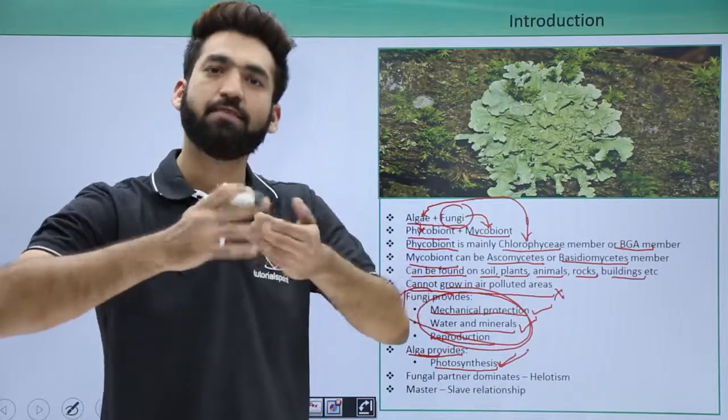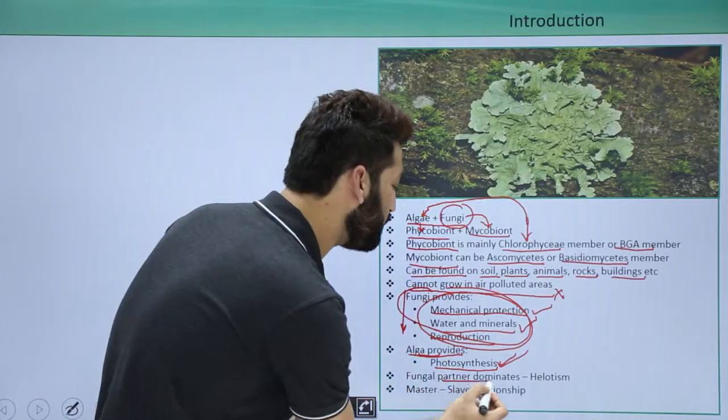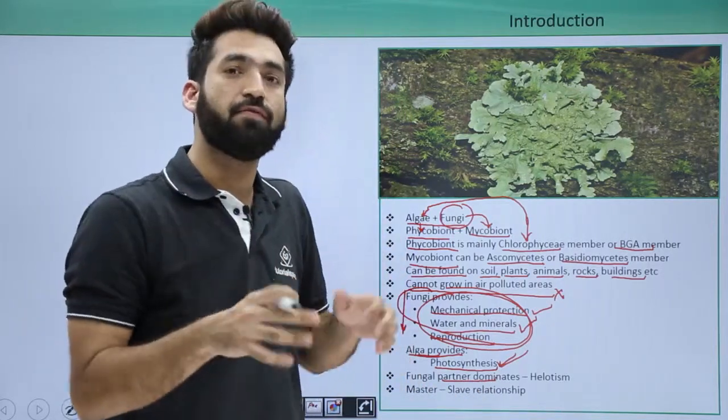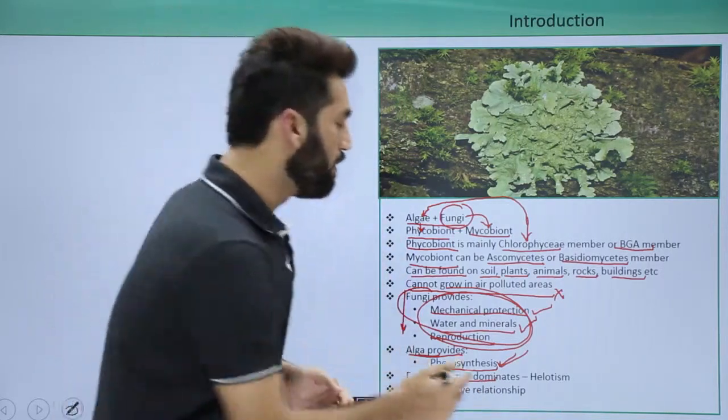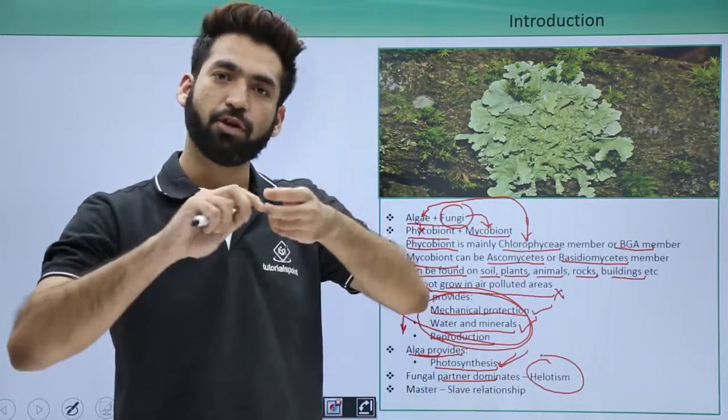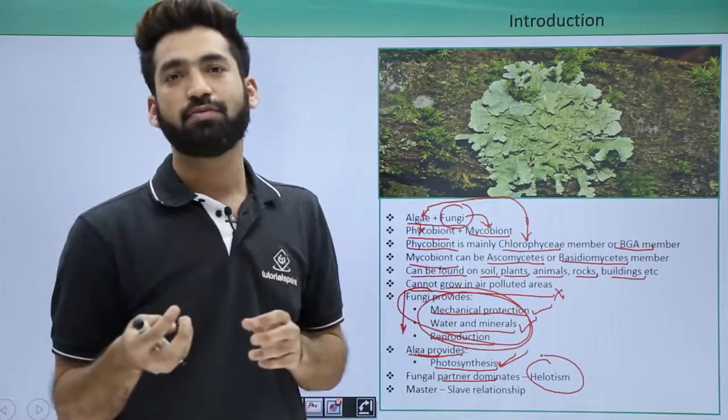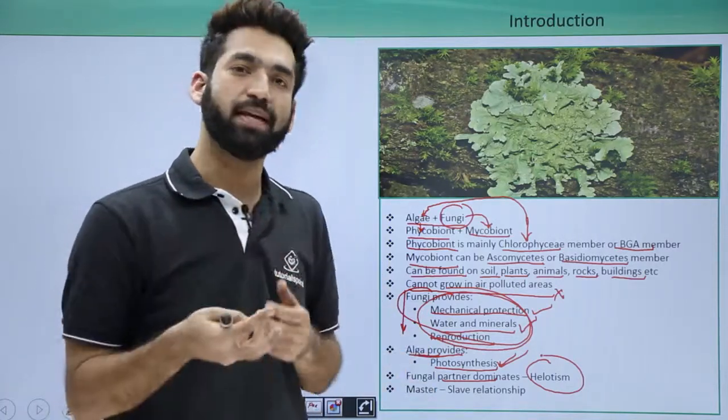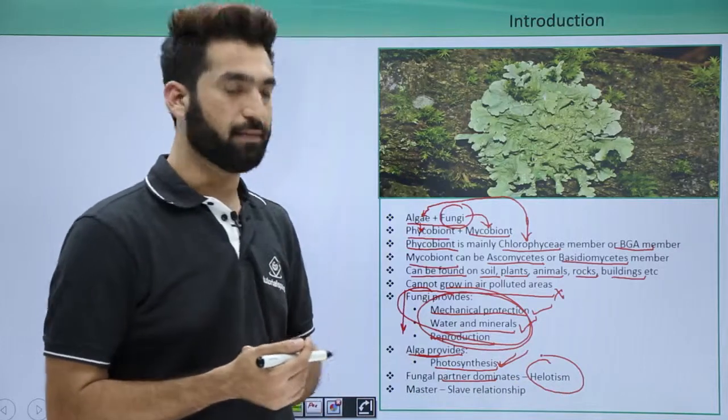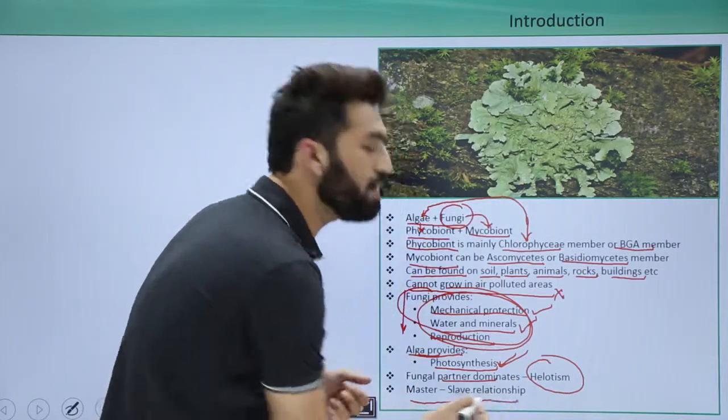So this is unbalanced symbiotic or unbalanced partnership where fungus is having a major role. Fungus is dominating the role which is called helotism. So such a symbiotic where you have not the balanced relationship, you have unbalanced relationship. Fungal partner is dominating, you call it as helotism. The relationship of lichen is also called master and slave relationship.